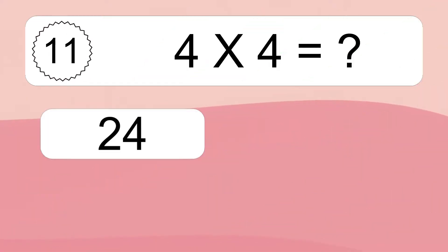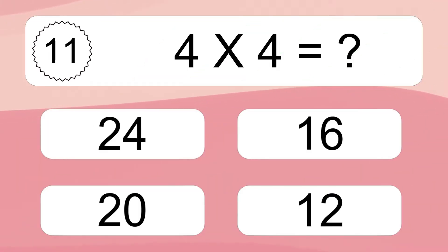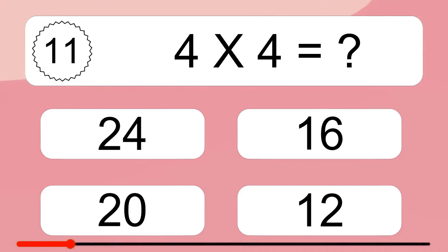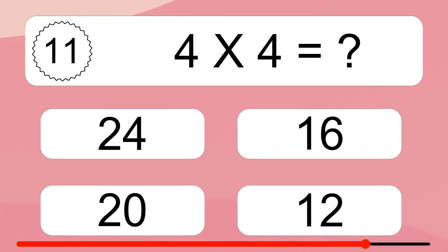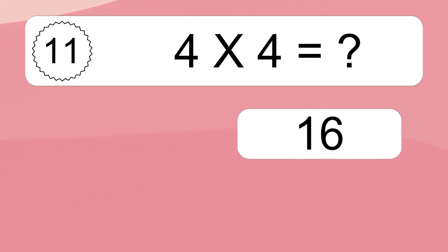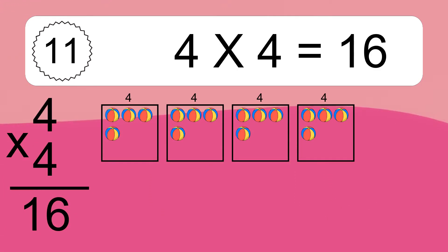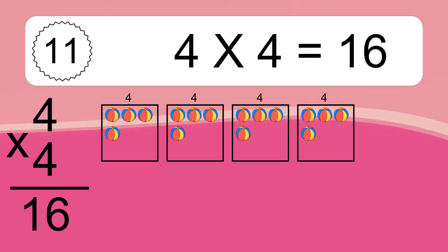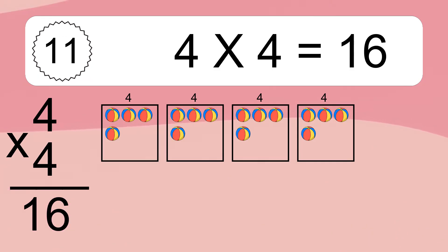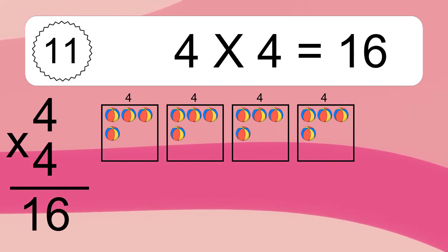4 times 4 equals what? 4 times 4 equals 16. We have 4 boxes, and each box has 4 colorful balls inside. If you count all the balls in all the boxes together, you will have 4 times 4 balls. This equals 16 balls.